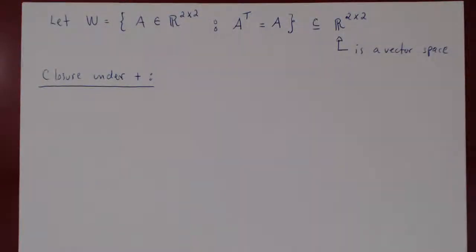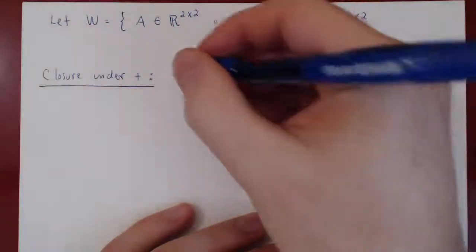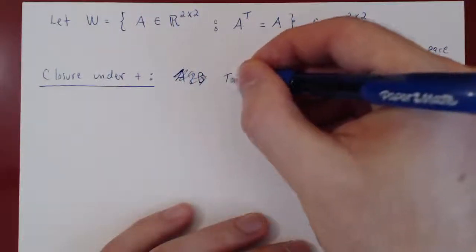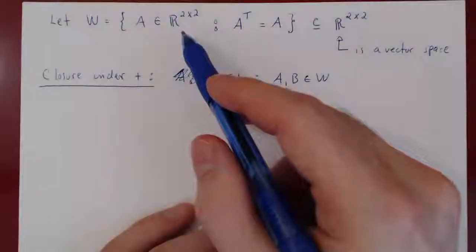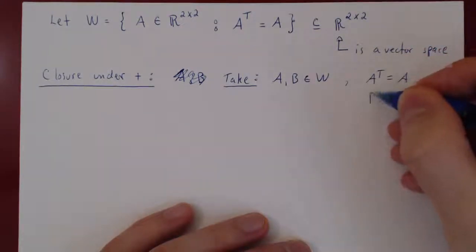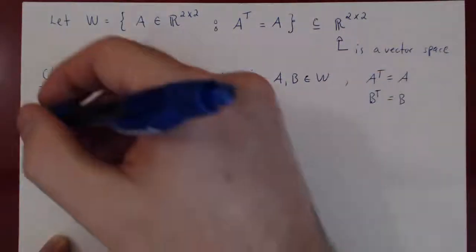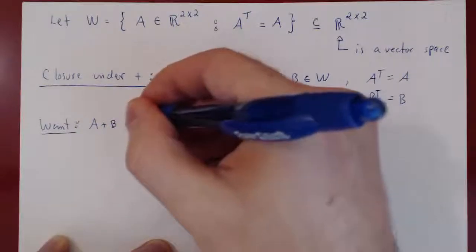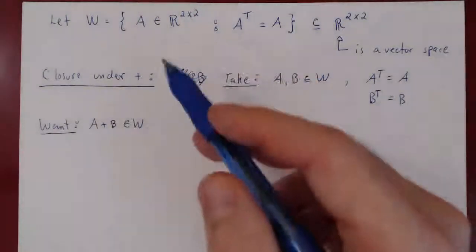Closure under addition means we take two elements of our space and show the sum is still in the space. We take A, B in W, so they are 2 by 2 symmetric matrices: A transpose equals A, and B transpose equals B. We want to show A plus B is also an element of W. Clearly, adding two 2 by 2 matrices gives a 2 by 2 matrix, so that part is obvious.